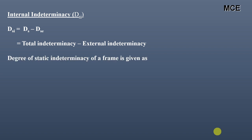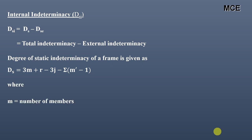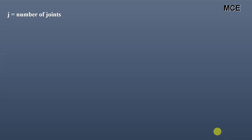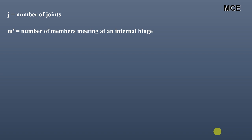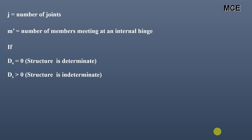The degree of static indeterminacy of a frame is given as: ds = 3m + r − 3j − Σ(m′ − 1), where m is the number of members, r is the number of reactions, j is the number of joints, and m′ is the number of members meeting at an internal hinge. If ds = 0, the structure is determinate; if ds > 0, the structure is indeterminate; and if ds < 0, the structure is unstable.